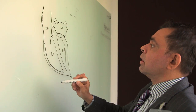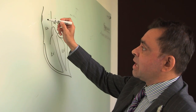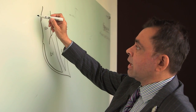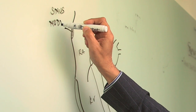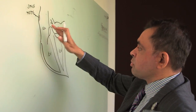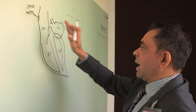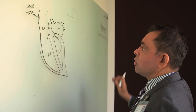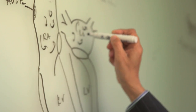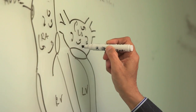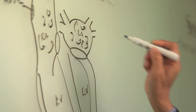Normal heart rhythm is set by the pacemaker here called the sinus node, and waves spread like ripples in a pond. In AFib you have something that's very much less organized.